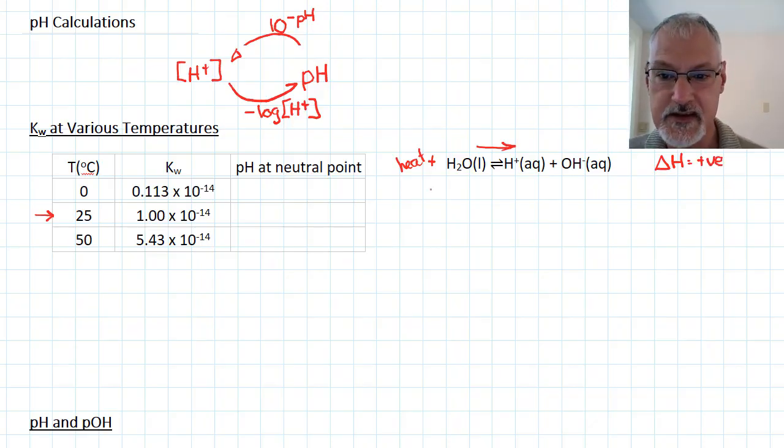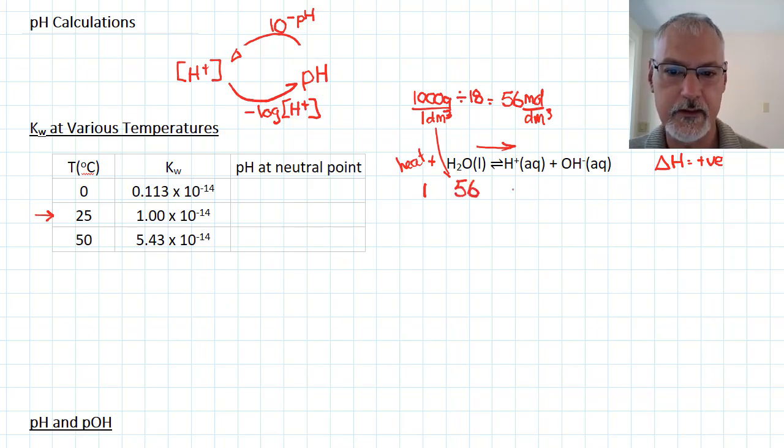Let's take a look at this in an ice table. I stands for the initial concentration. Now, it might seem a bit puzzling, but what's the initial concentration of water in water? We know that there are 1,000 grams of water present in 1 decimeter cubed or 1 liter, assuming a density of 1. If I divide that by 18, the molar mass of water, I can come up with that the concentration of water in water is approximately 56 moles per decimeter cubed. So I'm going to say that the initial concentration of water in water is 56, and there's none of my other ions present.